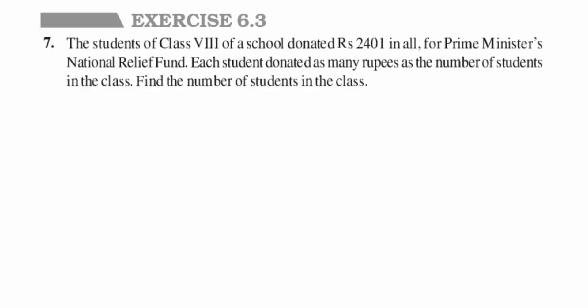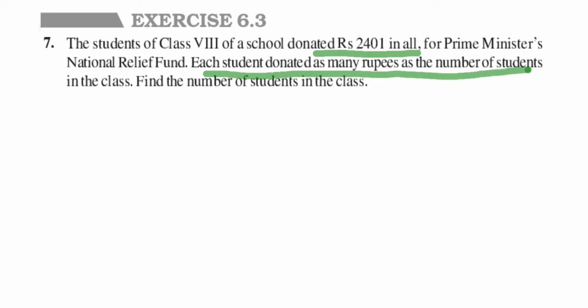Here is a question from exercise 6.37 on squares and square roots. The students of a class 8 school donated rupees 2401 in all for the Prime Minister's National Relief Fund. Each student donated as many rupees as the number of students in the class. We are given two things: the total donation is 2401, and there is a relation that each student donated as many rupees as the number of students.